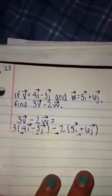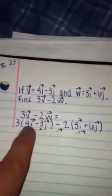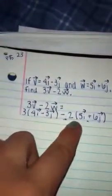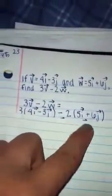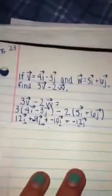3 vector v minus 2 vector w equals 3 times what vector v is, which is 4 vector i minus 3 vector j, which we found from the original problem, and then we're going to subtract 2 times 5 vector i plus 6 vector j, which is what w is. Now we're going to distribute.